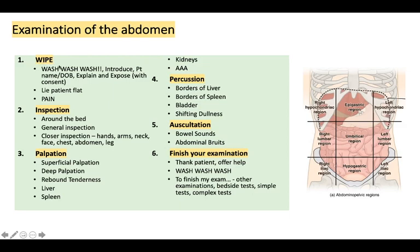To start the examination, remember the mnemonic WIPE: W — wash your hands (in real life and in exams), then introduce yourself to the patient, confirm their identity, ask for name and date of birth. Explain what you'd like to do and why, and after they give consent, ask if it's okay — for the abdominal examination — to remove their top and lie flat. Also ask before you start if they're in any pain, where the pain is, and how bad it is, so you can start your examination away from the site of pain.